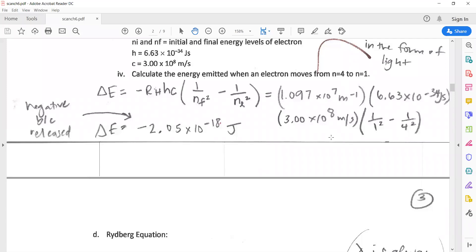Calculate the energy emitted when an electron moves from n equals four to one. That means it's coming from energy level four down to one, which automatically means energy is going to be released. So our change in energy is going to be a negative value. The equation tells me negative Rydberg constant which is 1.097 times 10 to the seventh, H is Planck's constant 6.63, C is speed of light 3 times 10 to the eighth. Then you have 1 over the final n value squared minus 1 over the n initial squared. So final was 1 squared and initial was 4 squared, and we get our energy to be negative 2.05 times 10 to the negative 18th.